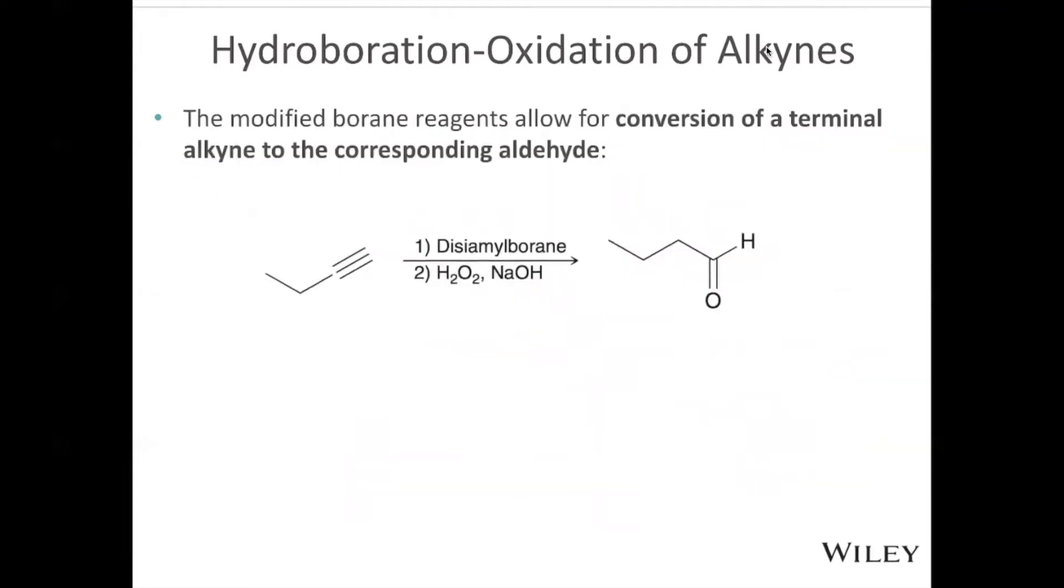And so typically what you're going to see when you see this reaction written is we'll have our alkyne, and then we'll have in the first step diisoamyl borane. And then in the second step, we'll have that peroxide and base giving us the non-Markovnikov addition of an alcohol, which ultimately tautomerizes into the aldehyde.